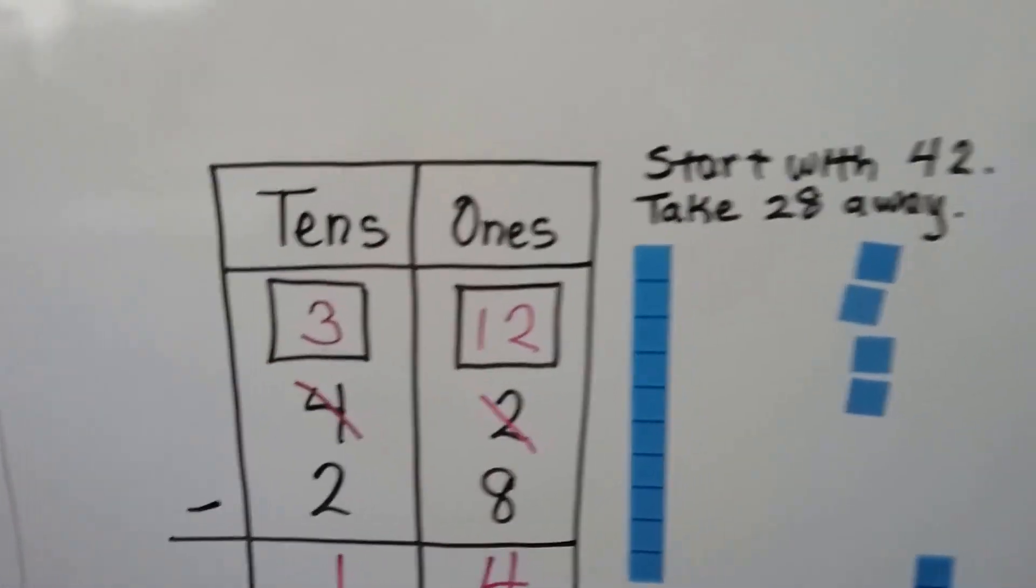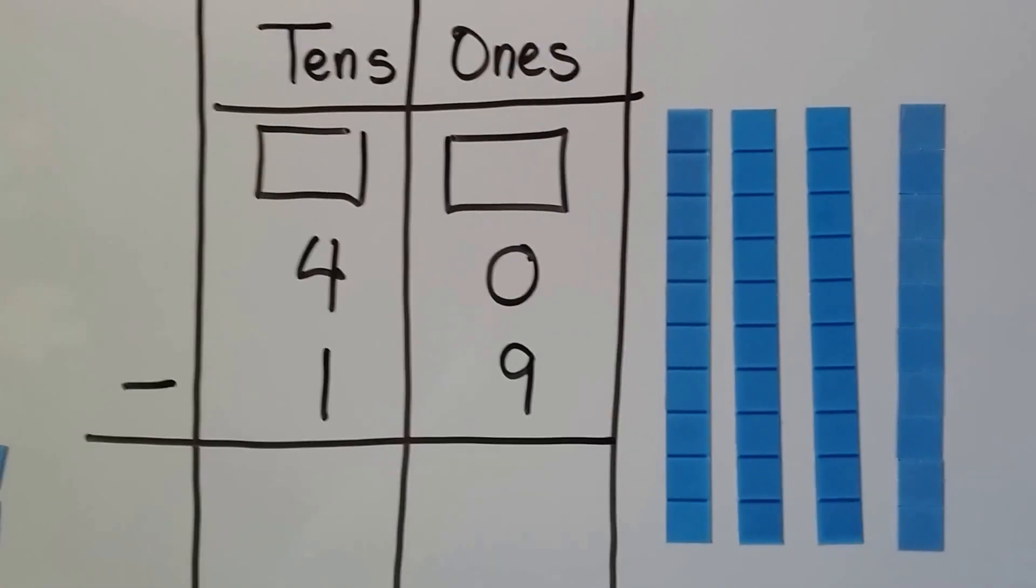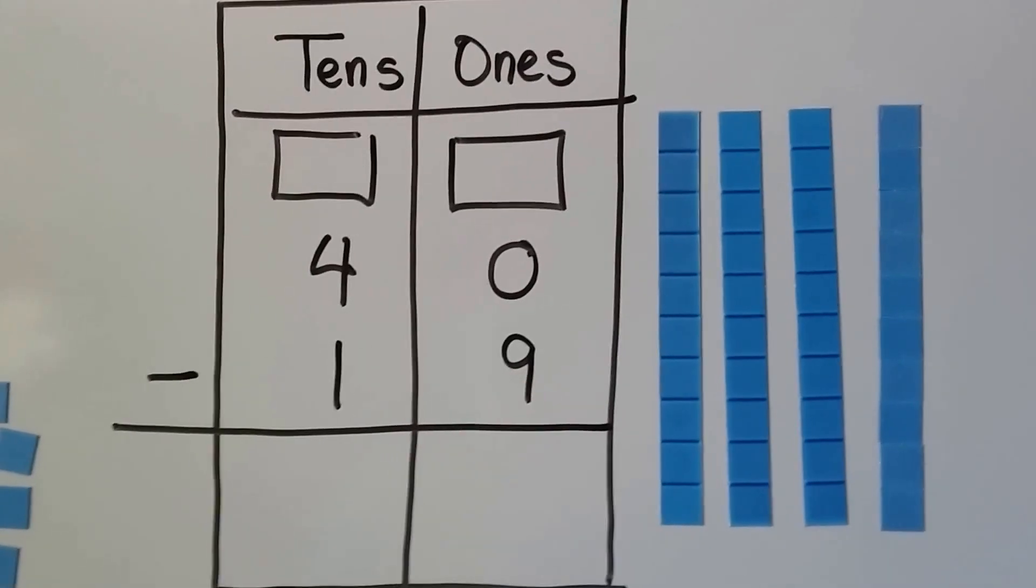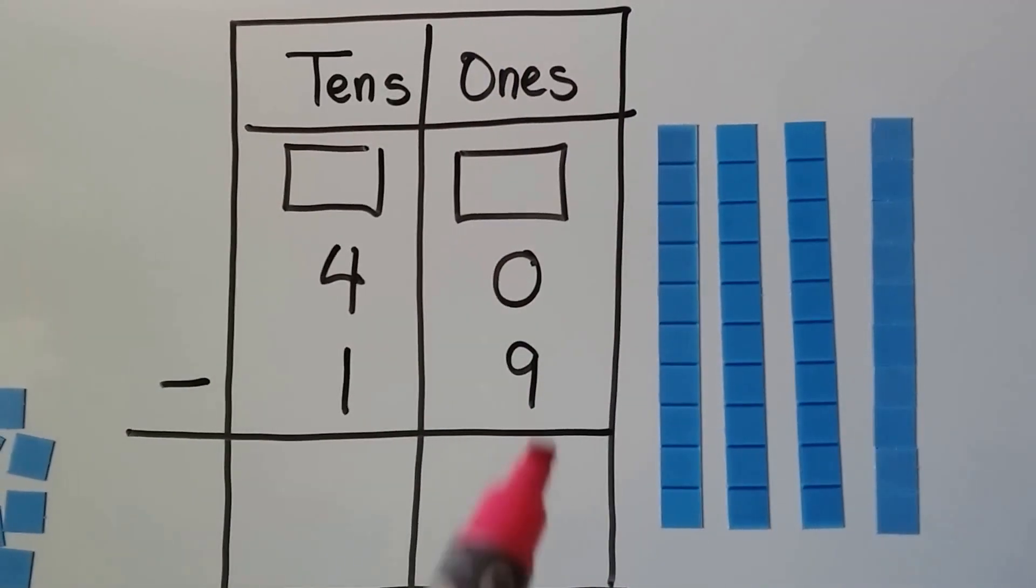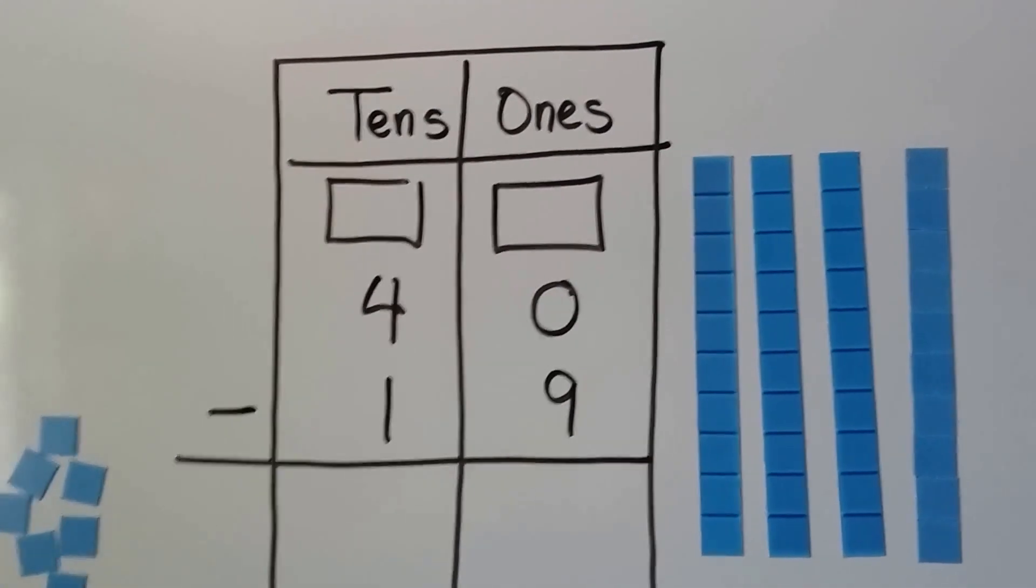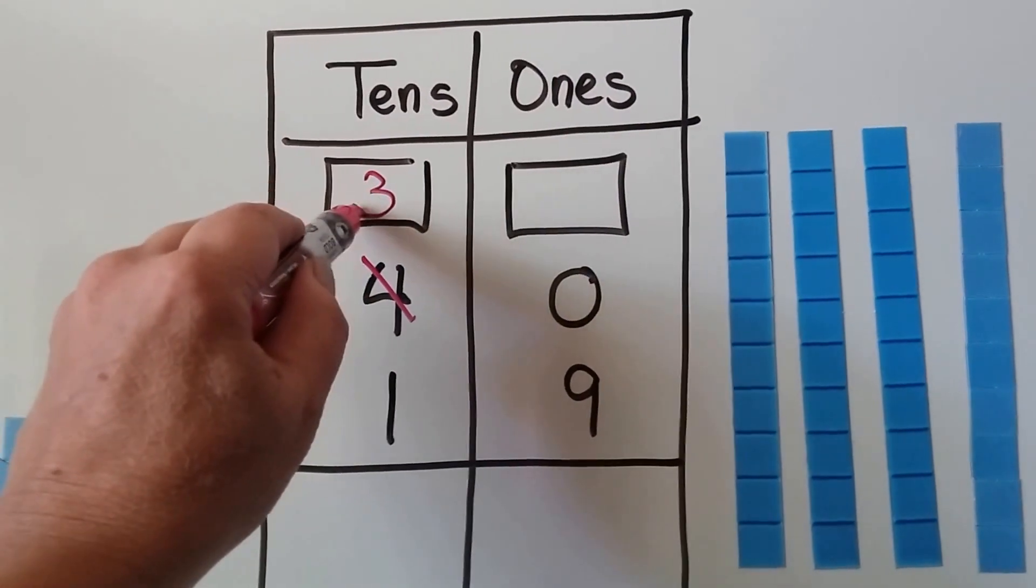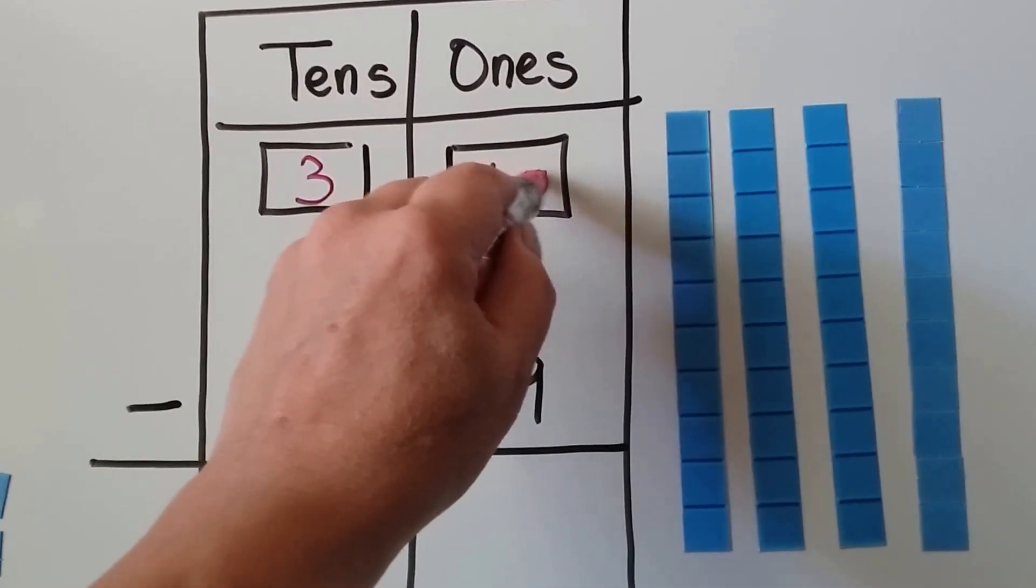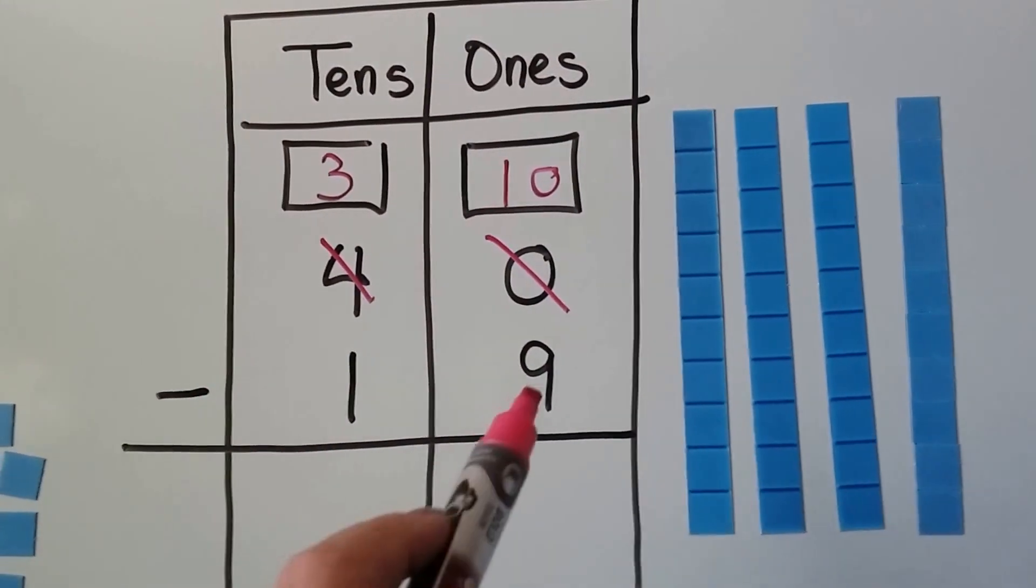Let's try one last one. We have 40 minus 19. We look at the ones place of the subtrahend and see it's a 9, and in the minuend it's a 0. So this is definitely greater. So we're going to have to regroup. We take 1 from the 4. It becomes a 3. We give it to the ones place. Now instead of the 0 ones, we have 10 ones. Now we can have 10 and take away 9.